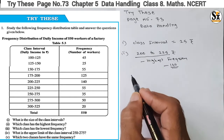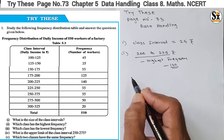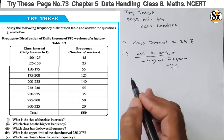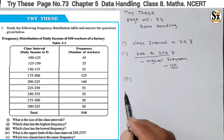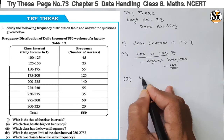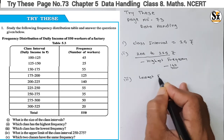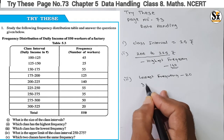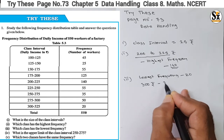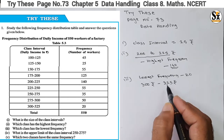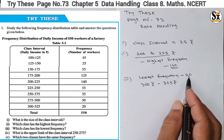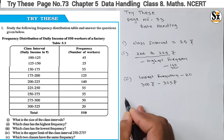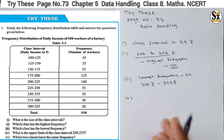Now the third question: which class has the lowest frequency? From the table we can see 20 workers is the lowest frequency. The lowest frequency is 20 workers, and that frequency is for the class of 300 rupees to 325 rupees. For this class interval, only 20 workers are there, meaning this class interval has the lowest frequency of 20.